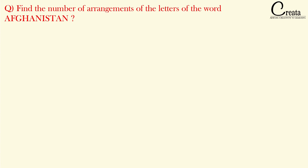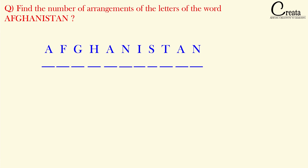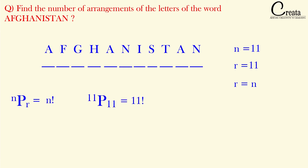Afghanistan is a country. Here we are having the word Afghanistan, which is basically an 11-letter word, and we have to find the number of different arrangements from this word. It is an 11-letter word, so N equals 11, and the number of vacant places R equals N. So we can say the permutation will be 11P11, that is N is 11 and R is 11, giving us 11 factorial.